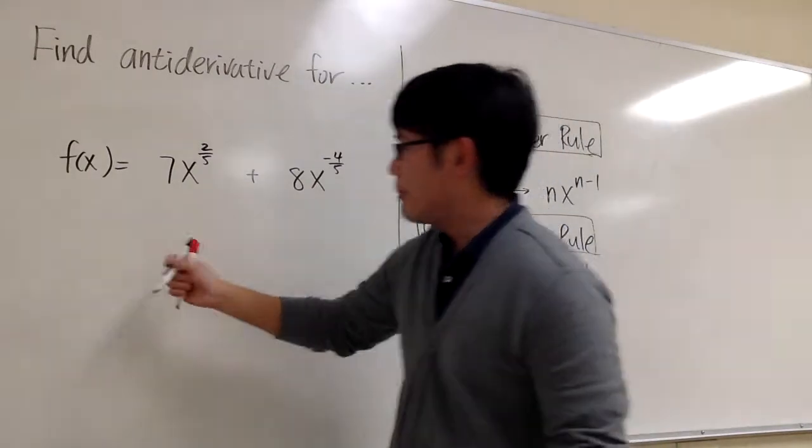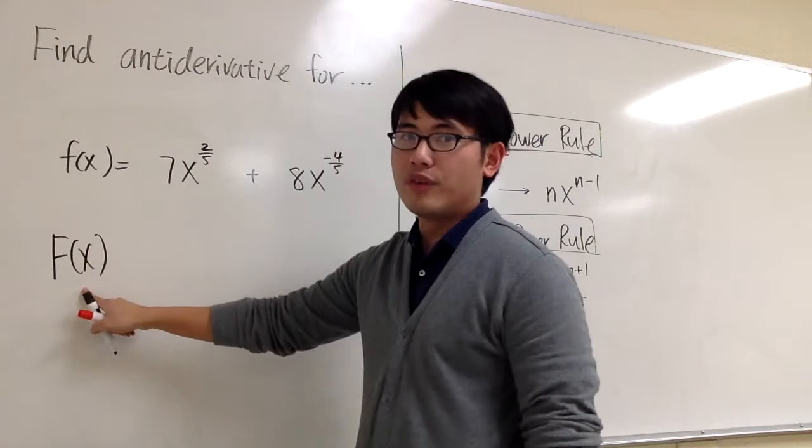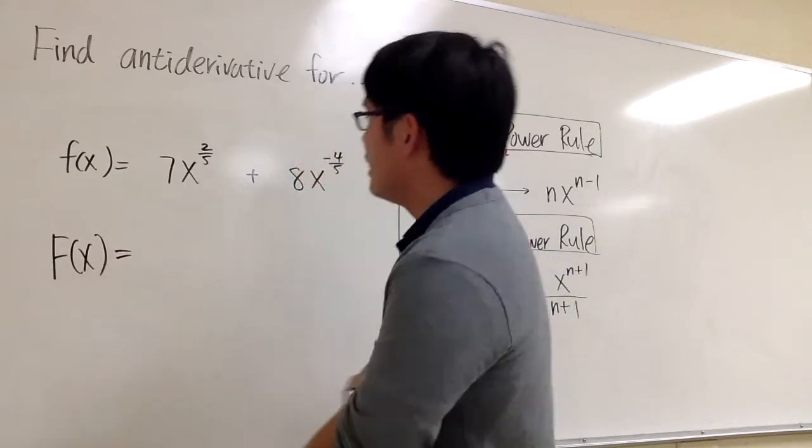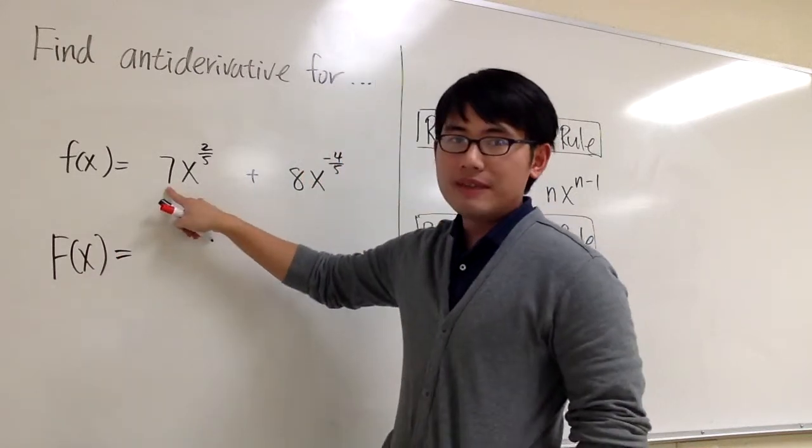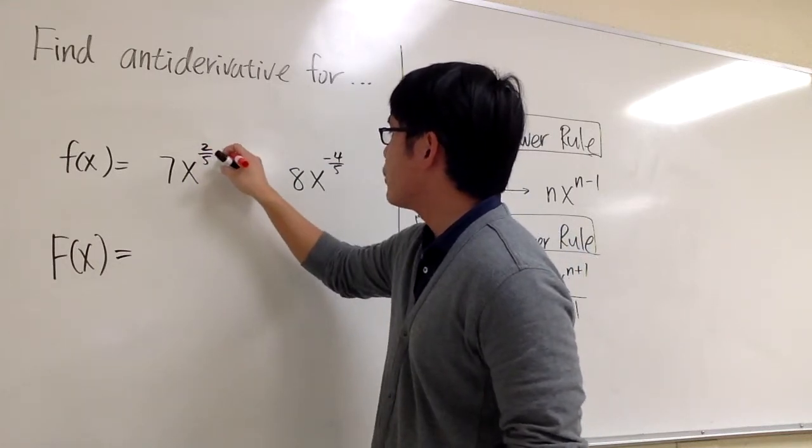So let's take a look at this one. And by the way, I should write down, I'm going to get capital F(x) for the anti-derivative. For this one, we have 7 times x to the 2/5. 2/5 is the exponent, so I'm going to add one to it.